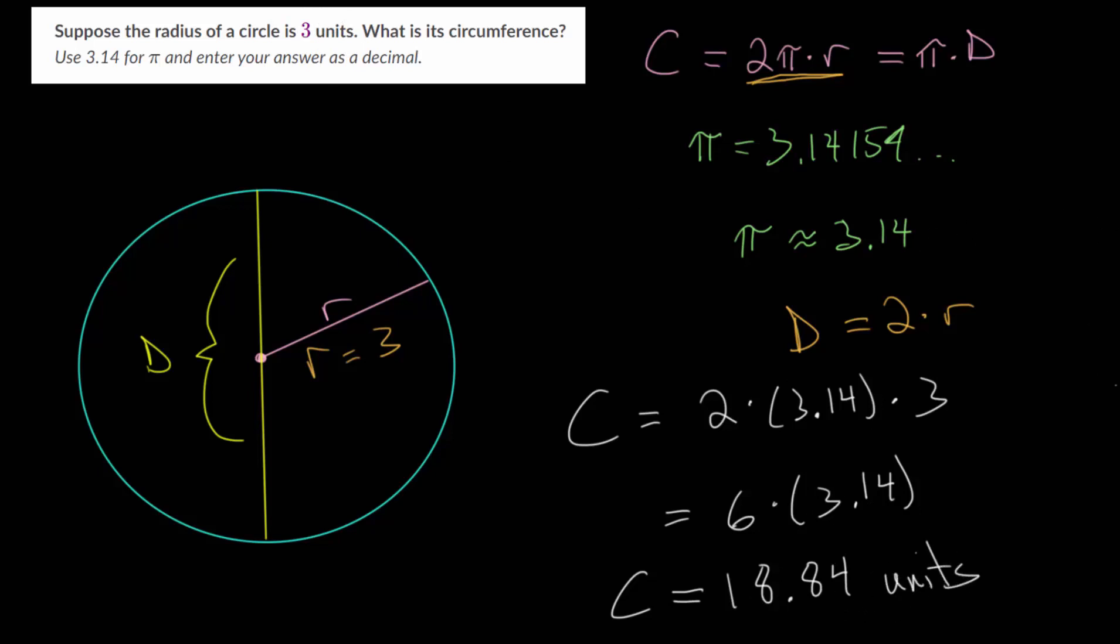Now let's do one more example problem. In this one, we're told a circle has a circumference of 153.86 units. In this case, we need to figure out the radius. It's essentially the reverse of the problem we just looked at.